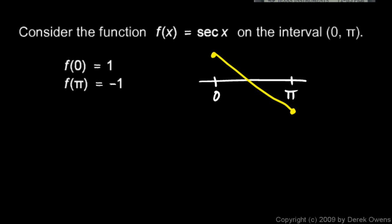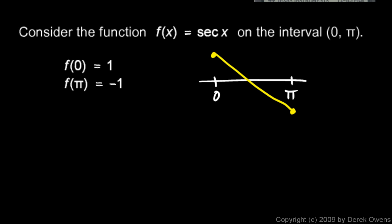What's going on here? You might think: if it goes from a positive number to a negative number, doesn't it have to go through every value in between? So certainly there's a zero, right? No, there's not. Remember, the intermediate value theorem only applies to continuous functions. What does the secant function look like?